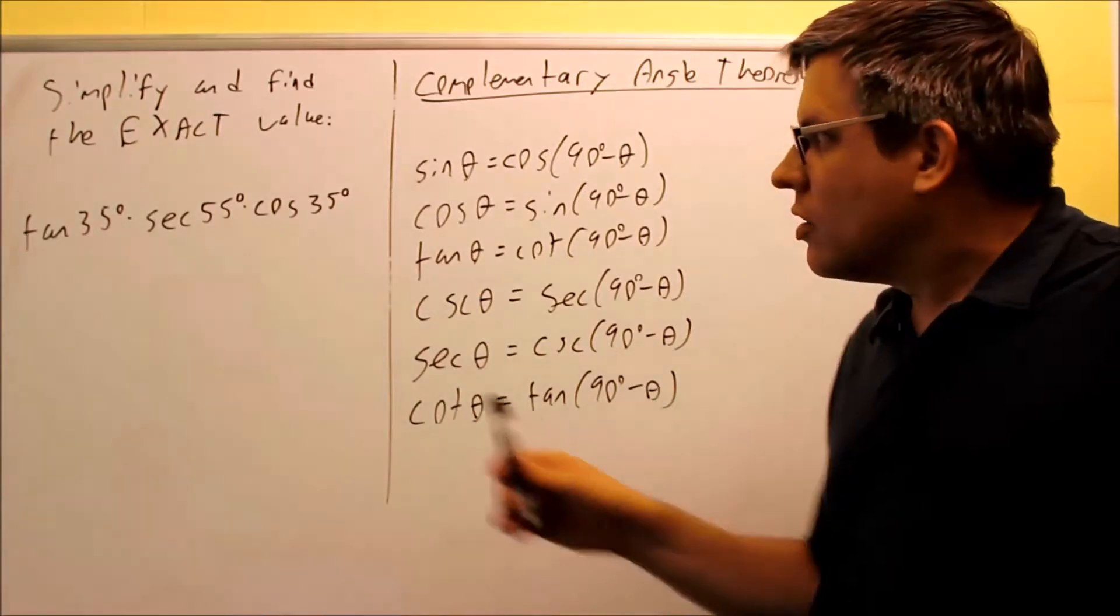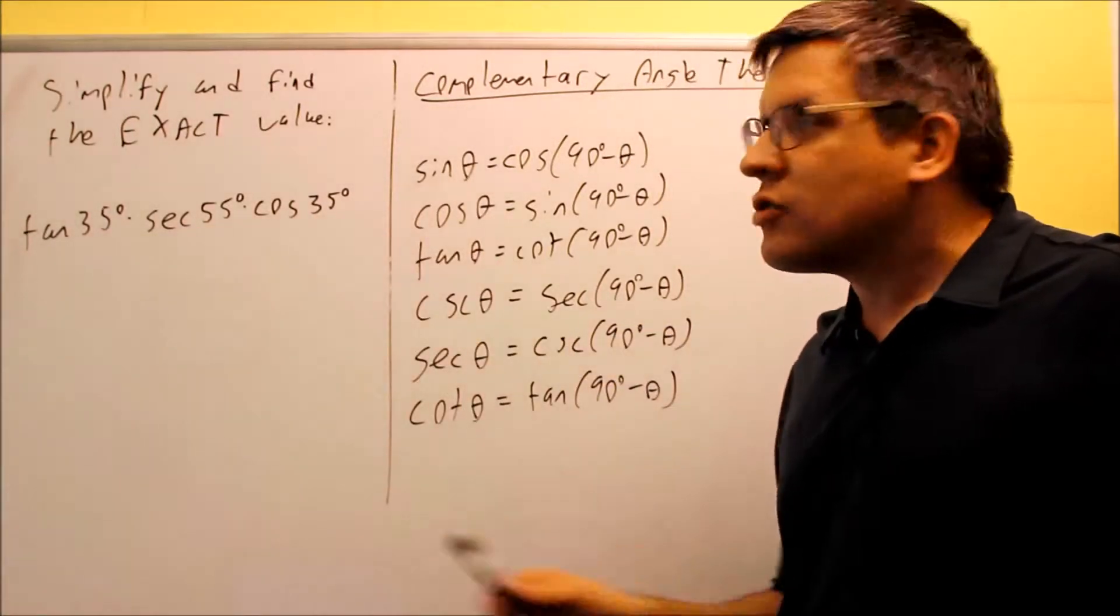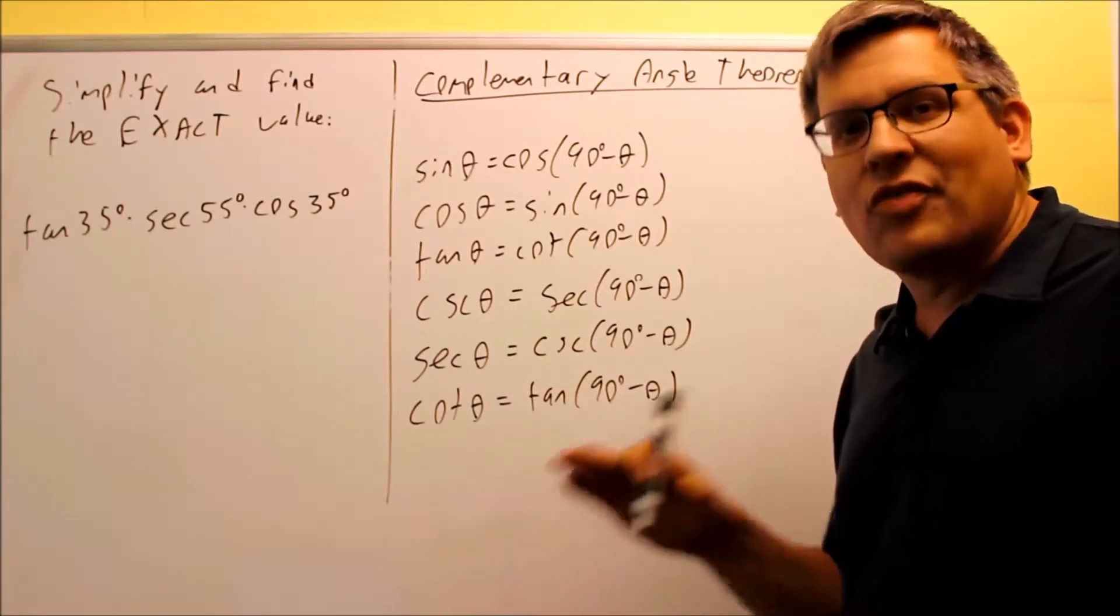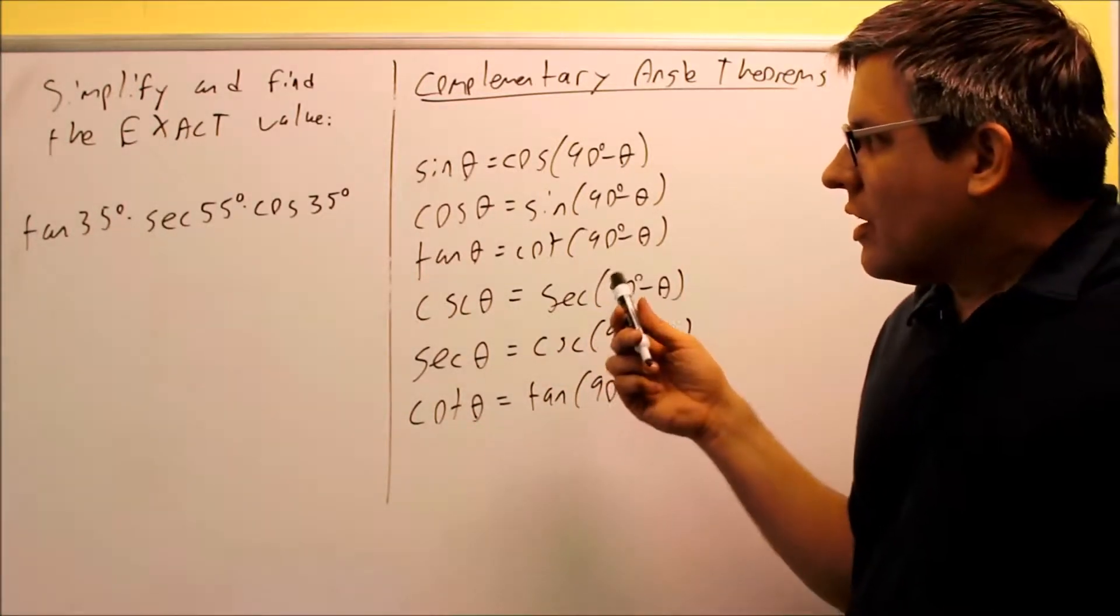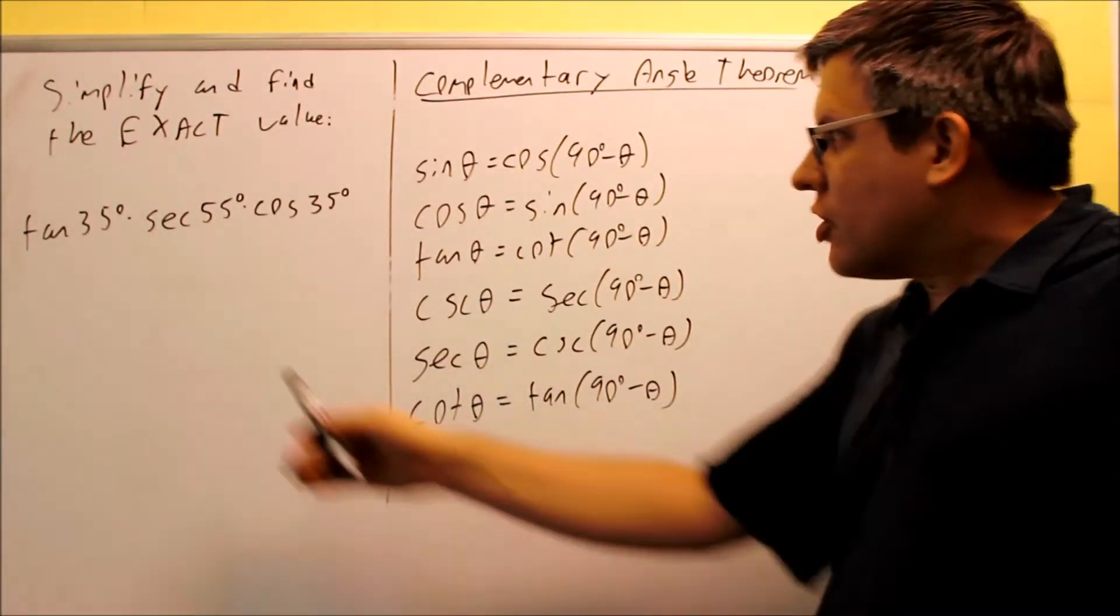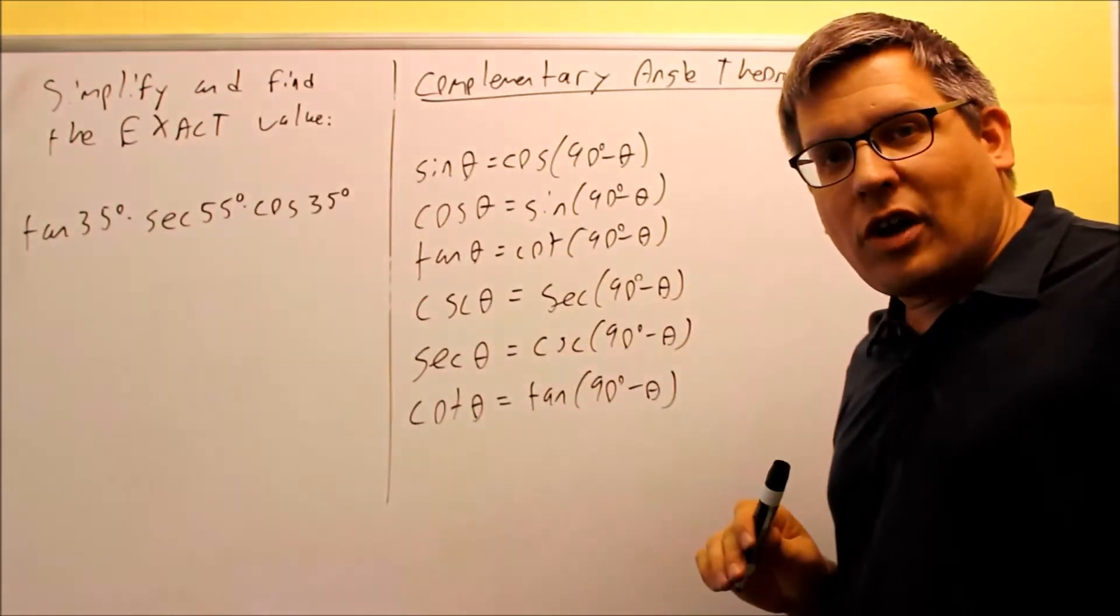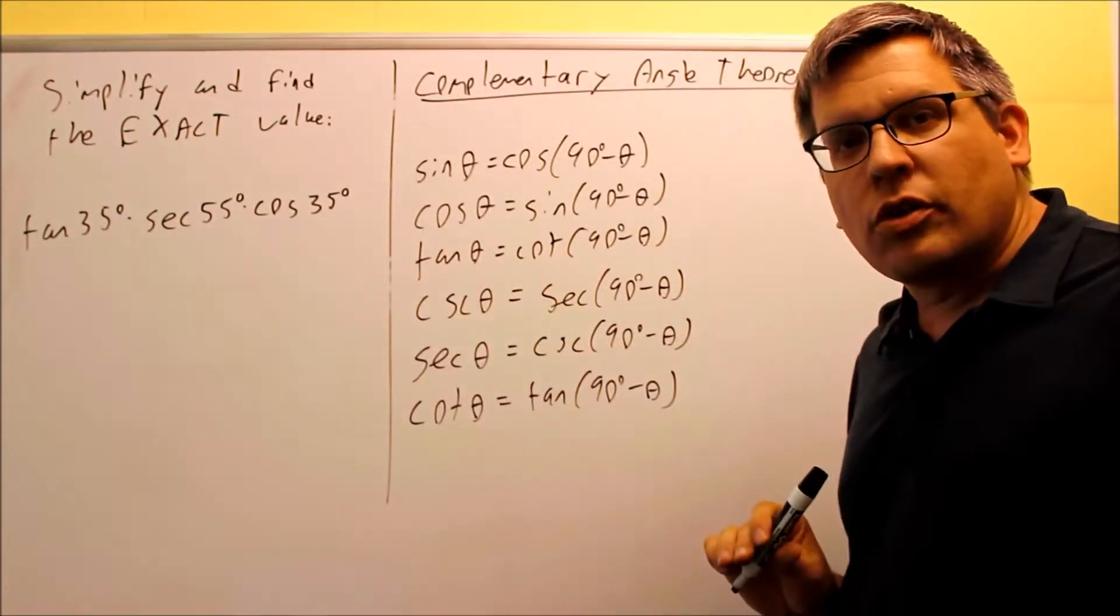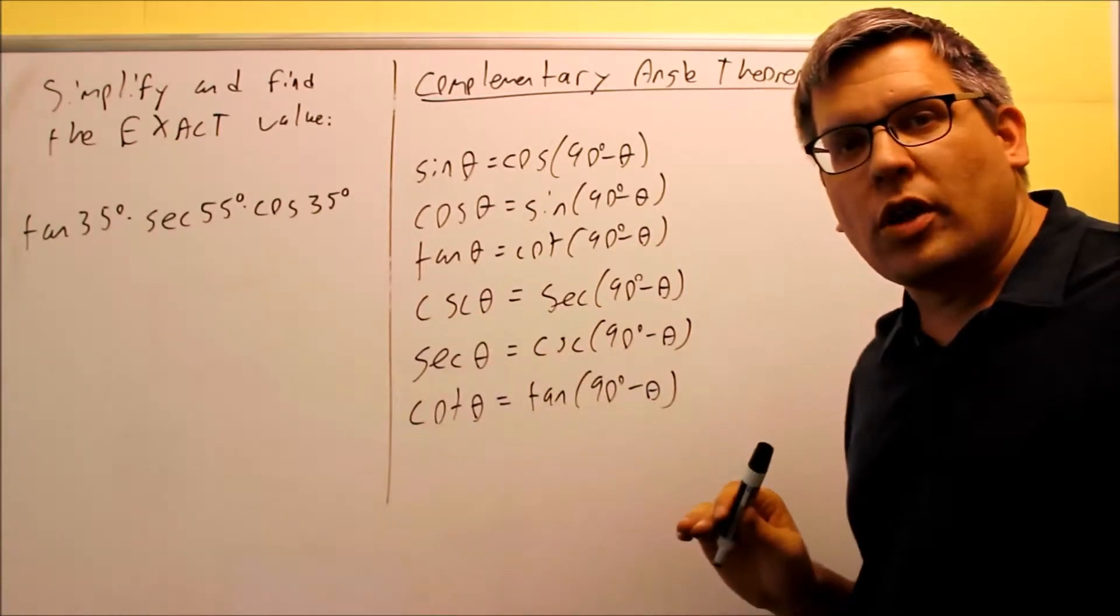I'd like to change them either all into 55s or all into 35s because I can do some more things to simplify later if all the angles have the same measurement. So I can either use my complementary angle theorems that I have here to change both the 35s and the 55, but that's going to be a little bit more work. Let's just work with changing the middle one into a 35 since we only have to use the formula once.